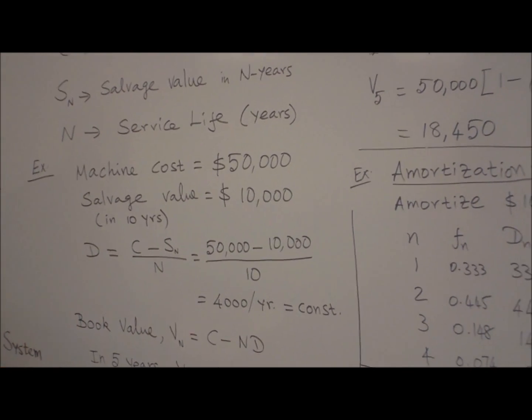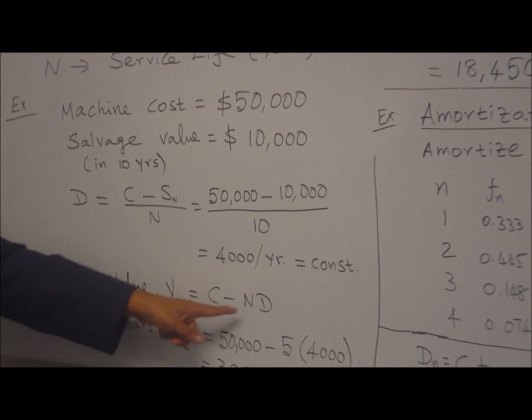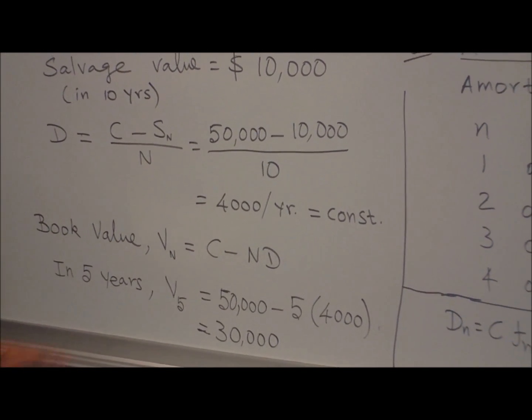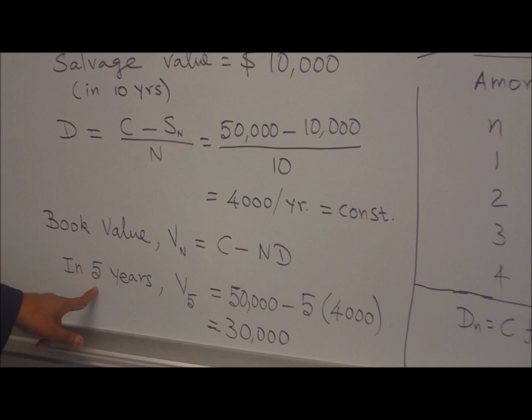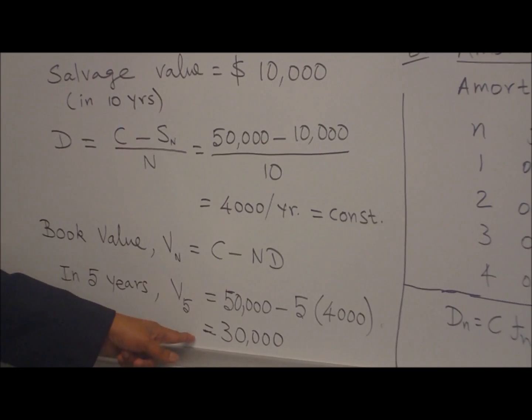Suppose you want to find the book value at the end of 5 years. Use this formula: V_N equals C minus N*D. You know C, N equals 5 because you want to know at the end of 5 years, D is 4,000 we just calculated. Substitute, you get $30,000. That's your book value in 5 years.